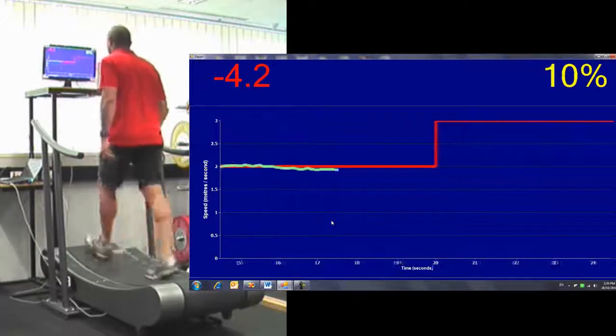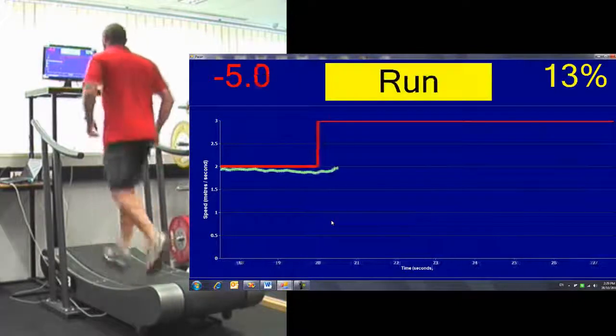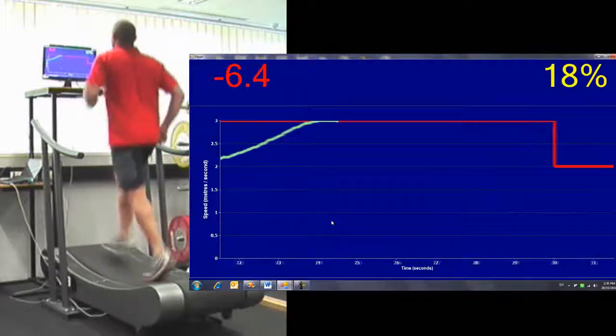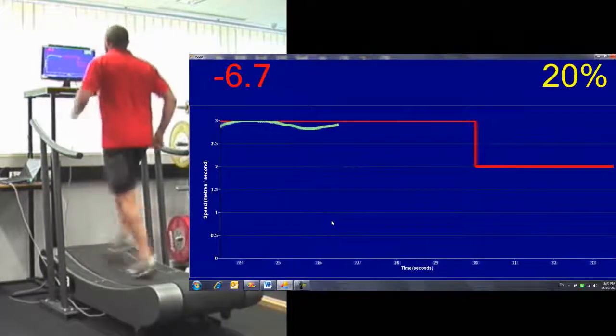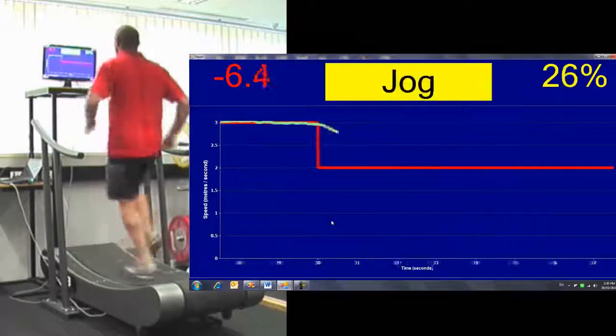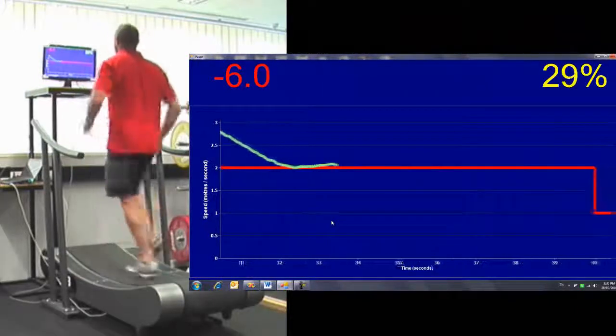In this image you can also see in the upper left corner of the screen the distance behind the target the athlete is currently at, and to the right of the screen the percentage of the trial that they are currently conducting.